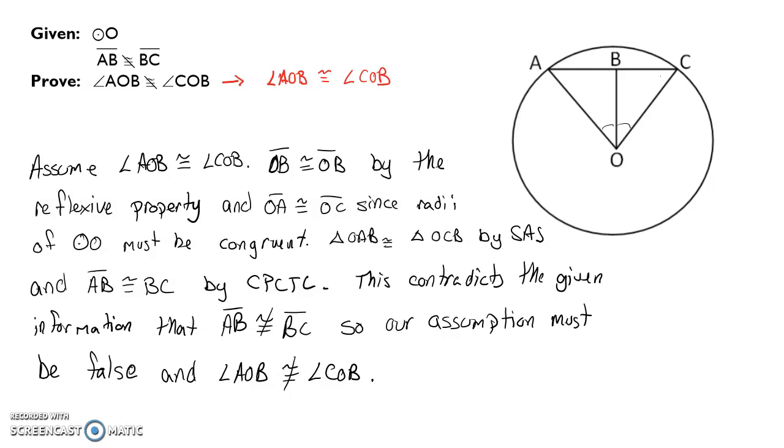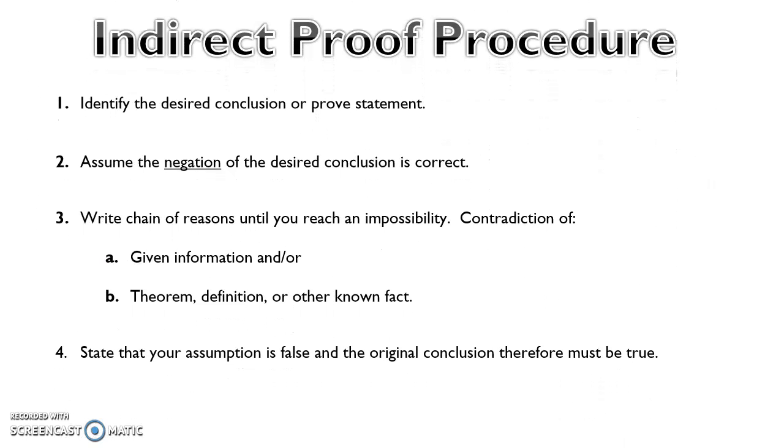Again, just to quickly summarize, as we are looking at indirect proof, we want to identify the desired conclusion or prove statement. We can use this no matter what. It's typically done when our prove statement is a negative, when it is a not equal to or a not congruent. That's when we typically are going to use indirect proof. We assume the negation of that statement. Then follow the chain of reasoning that we have until we contradict either a given piece of information, a theorem, a definition, some known fact. Once we contradicted one of those things, state that our assumption is false, and that the original conclusion therefore must be true.